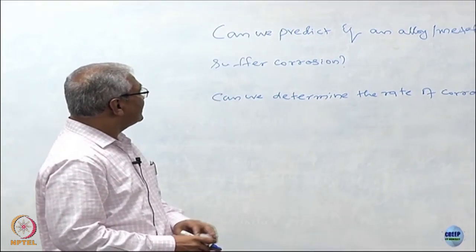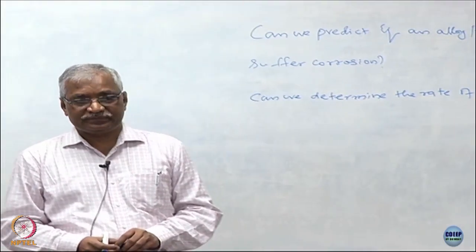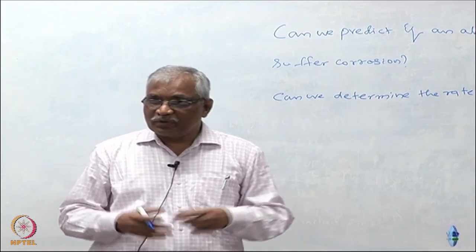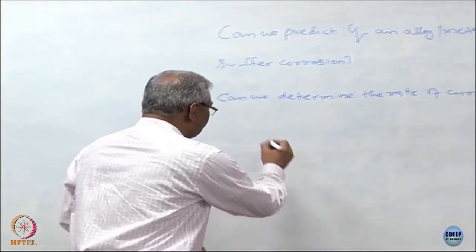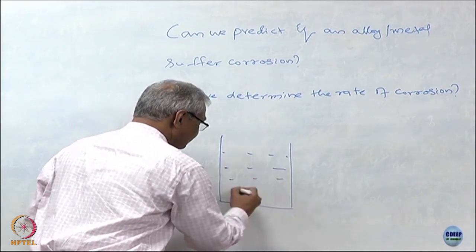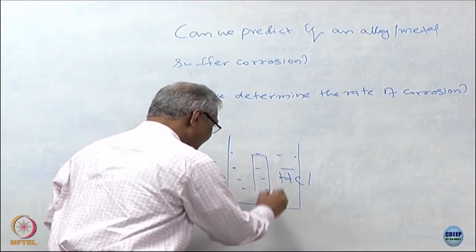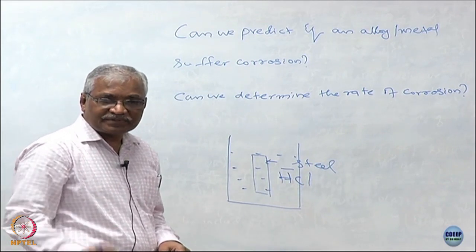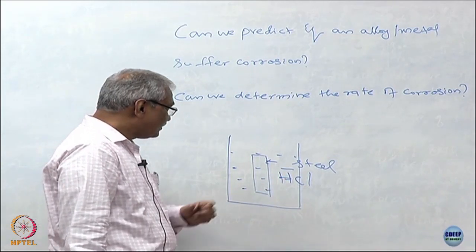Let us take the first question: can we predict if an alloy or metal can suffer corrosion in a given environment? Before we address this question, we need to go a little deeper into what corrosion means. Take an illustration — if I take a beaker and fill it with hydrochloric acid and immerse steel, whose major constituent is iron, what do you think will happen?